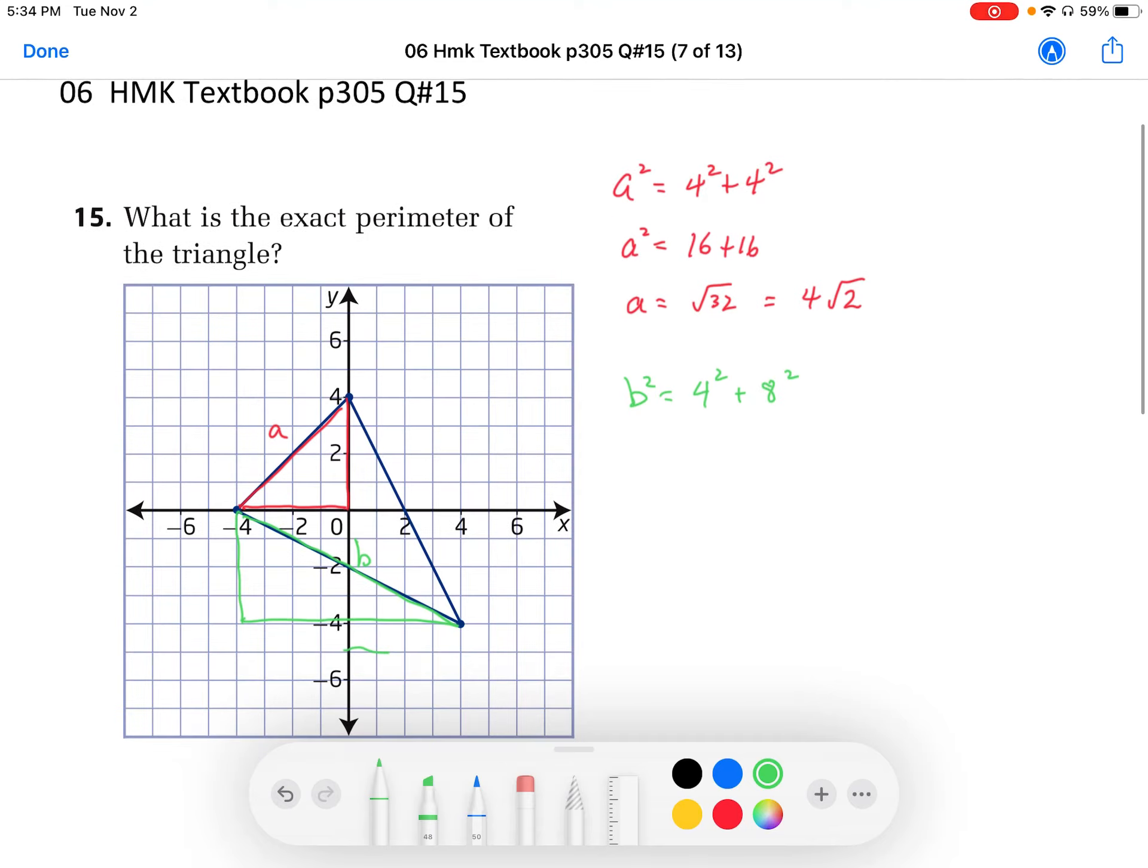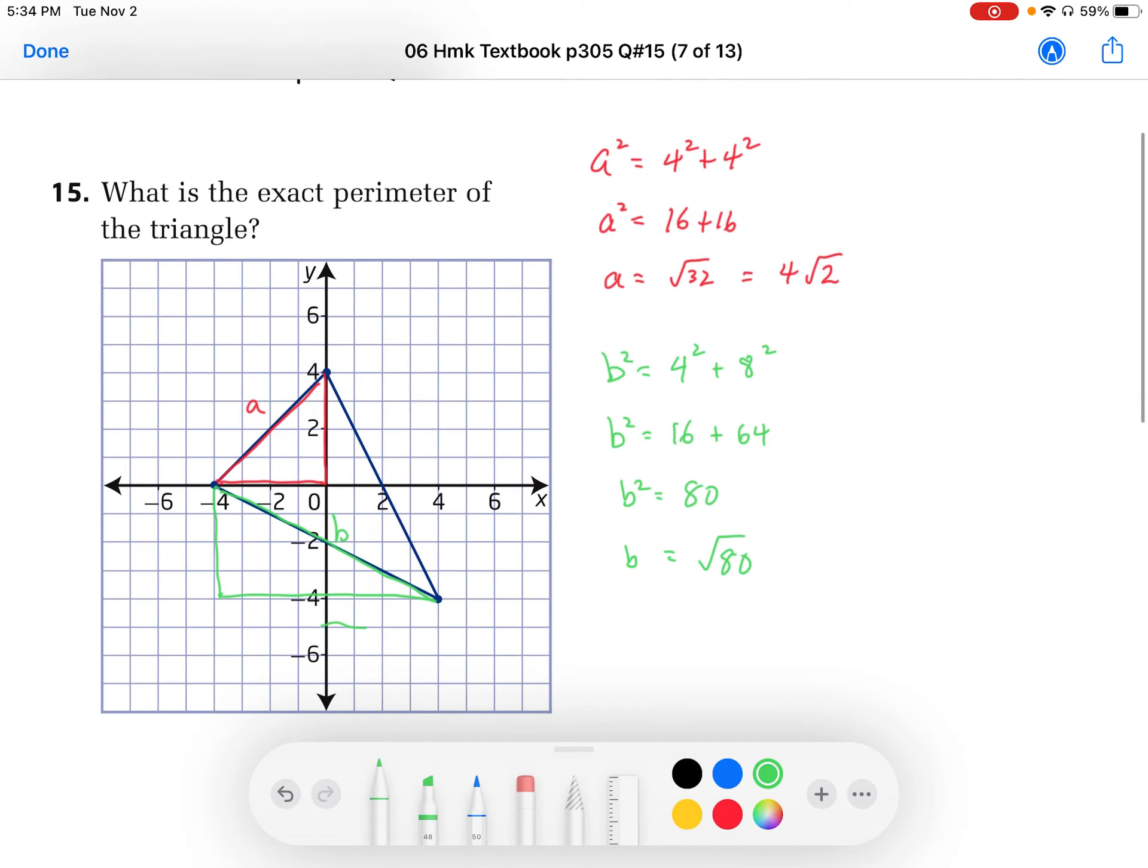And so we end up with B squared is equal to 16 plus 64. B squared is equal to 80. So B is equal to square root 80. So that can be simplified as well. This can be written as 16 times 5. The 16 can come on the outside and it becomes 4 root 5. So that's the value of B.